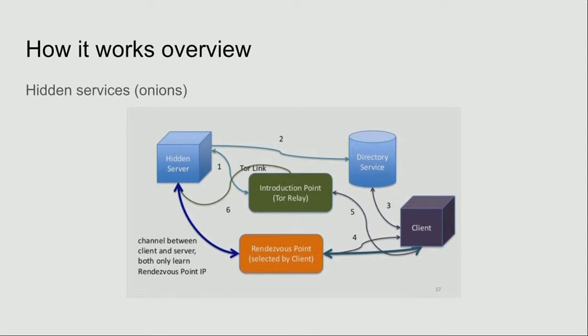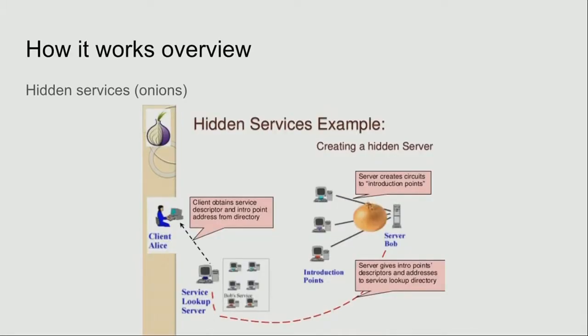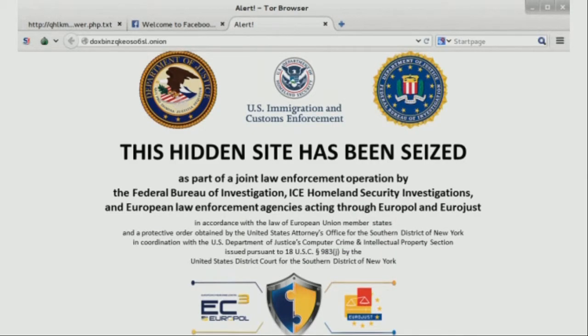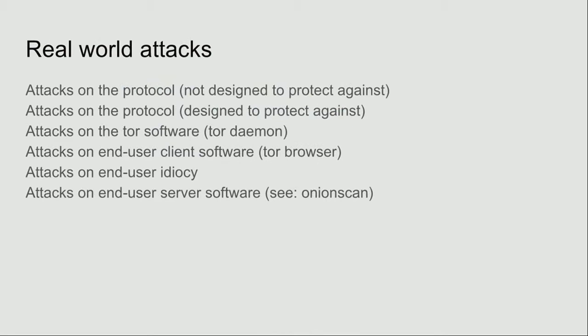But of course, as you might have imagined, there are some flaws with this idea. So what are we going to go over? We're going to cover some attacks on the protocol that Tor is not designed to protect against — it's really important to understand what Tor will and won't do for you. We'll cover things it is designed to protect against but maybe doesn't do as well as it could, some attacks on the Tor software itself, attacks on end-user client software like the Tor Browser Bundle, attacks on end-user idiocy — always fun — and lastly some end-user server software issues, like our OnionScan demo.